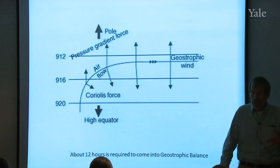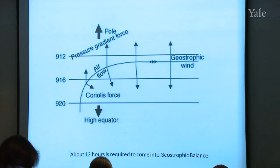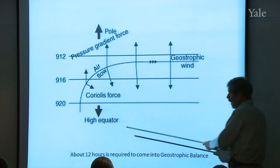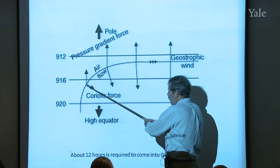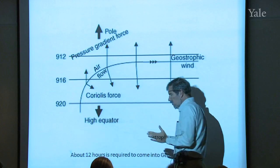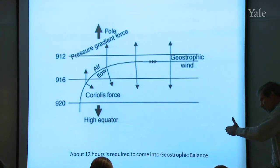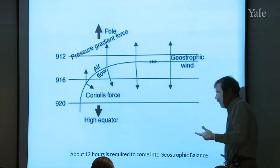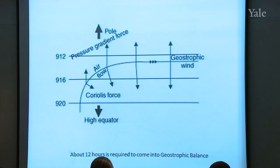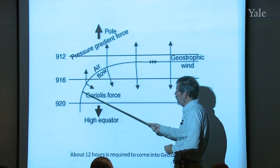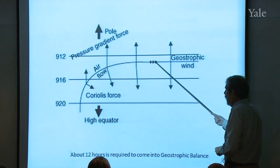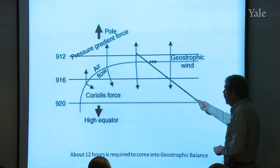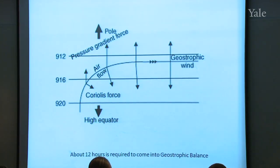As the parcel picks up speed — one meter per second, two, three — it starts to feel a Coriolis force, small at first because the Coriolis force is proportional to wind speed. Because the isobars are equally spaced, the pressure gradient force remains constant throughout. So it's always being pushed north by the pressure gradient force, but as it turns and accelerates, it eventually ends up moving east with a speed that gives it an equal and opposite Coriolis force and pressure gradient force.